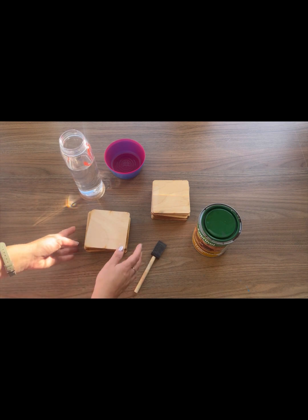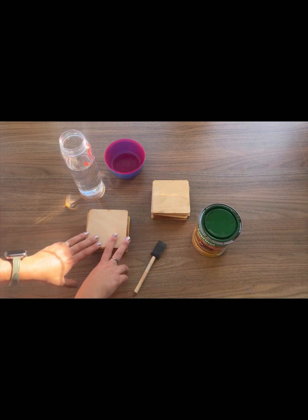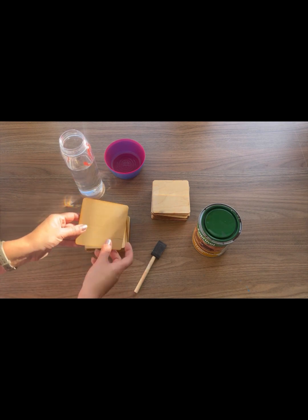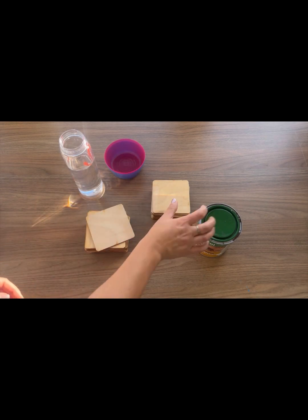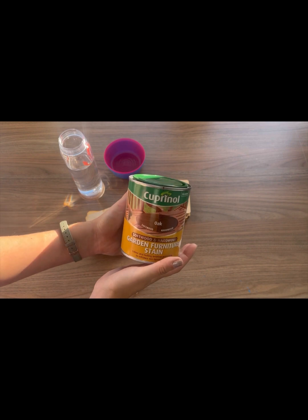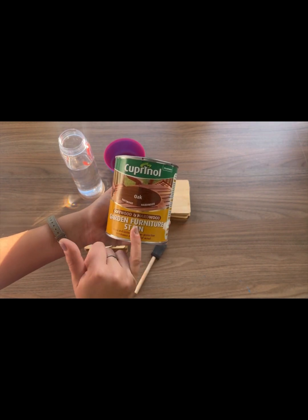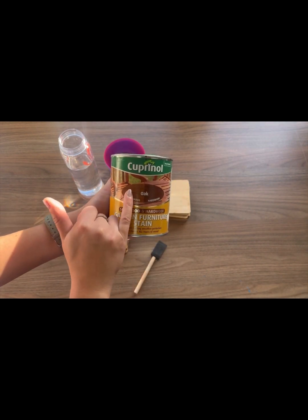What I'm going to do now is, I don't want the color that they come in, this basic plywood color, so what I'm going to do is use my wood stain. I've got this Cuprinol oak wood stain and it will be roughly this color here.